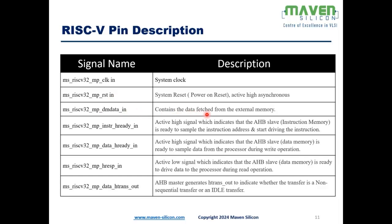DM_DATA_IN is a 32-bit data bus containing data fetched from external memory. INSTRUCTION_HREADY_IN is an active-high AHB signal indicating the AHB slave is ready to drive the instruction to the processor core. DATA_HREADY_IN is an active-high signal indicating the data memory (AHB slave) is ready to sample data from the processor during write or store operations. HRESPONSE is an active-low signal indicating the data memory is ready to drive data to the processor during load or read operations.